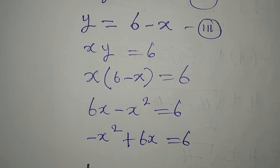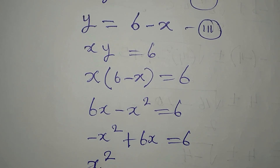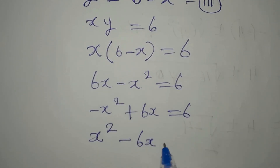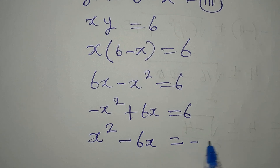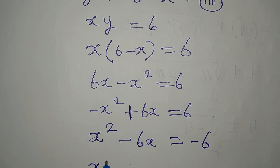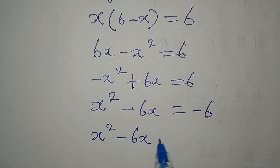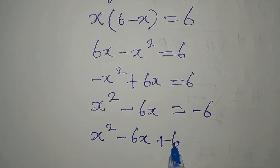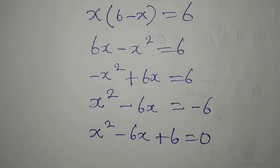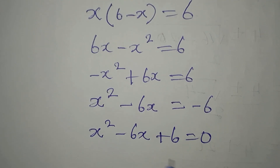If we rearrange, we are not expected to have a negative coefficient first, so we multiply through by negative 1. That gives us x squared minus 6x, and bringing the constant to the left gives us x squared minus 6x plus 6 equals 0. Now, can we find two numbers that multiply to give 6 and add to give negative 6?